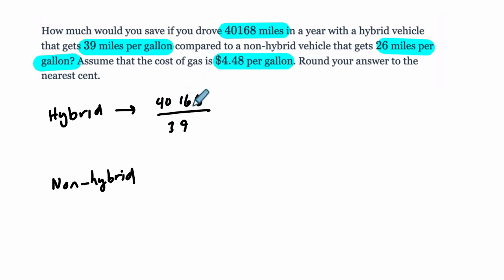Then, we talked about this in the last video, I'm going to leave the units out for now, just to keep it quick. And then I'm going to multiply that by the cost per gallon, because this is how many gallons of gas I'll need. If I multiply that by 4.48, that'll tell me how much it's going to cost, the hybrid, to drive that many miles in that year.